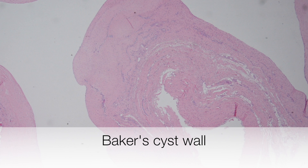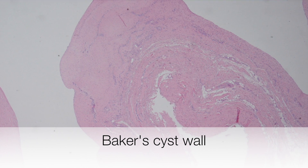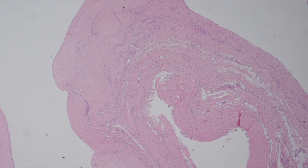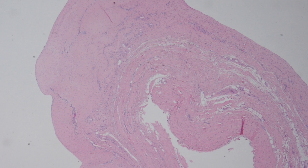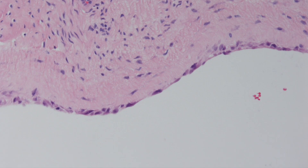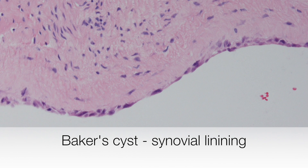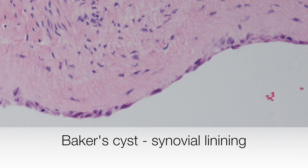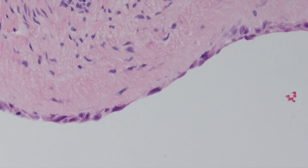This is a low power view of the wall of a Baker cyst, composed of unremarkable fibrous tissue. And this is a view of the lining of the Baker cyst, which is composed of synovial cells.